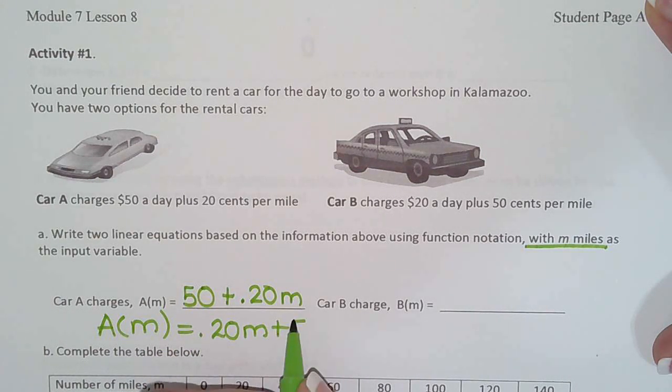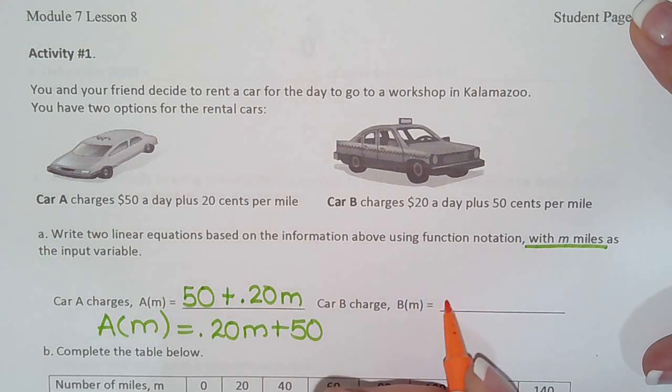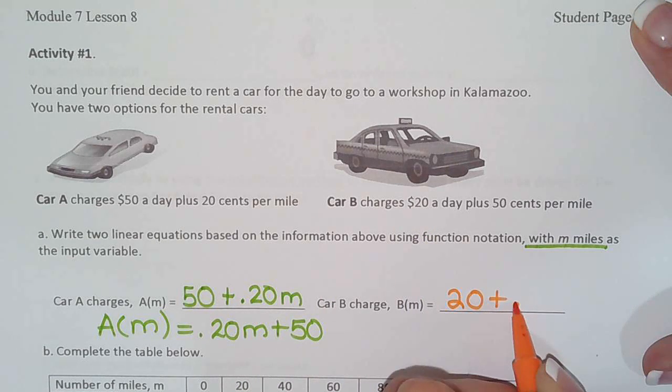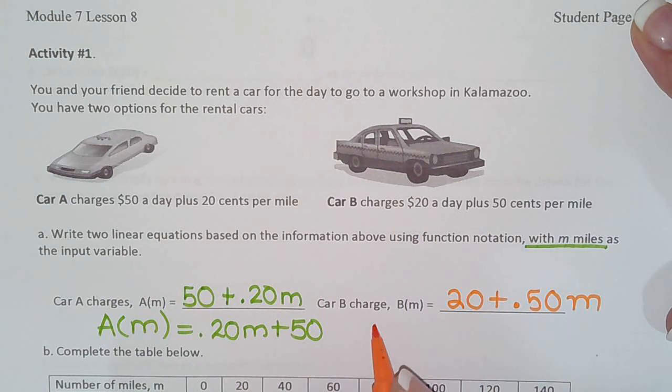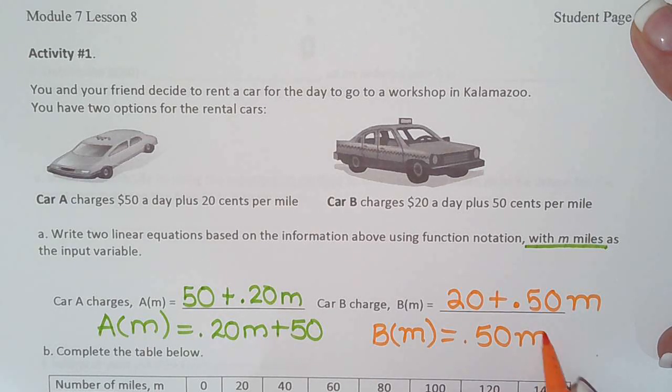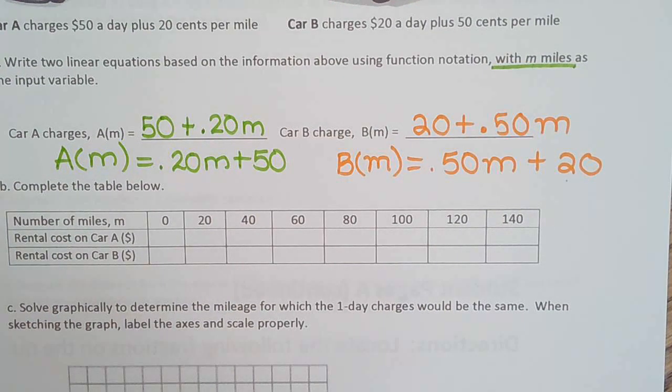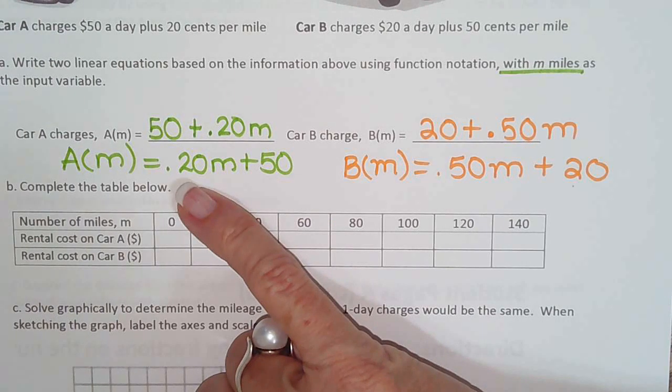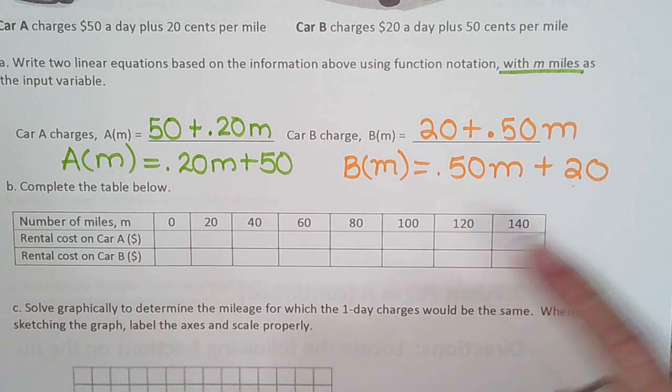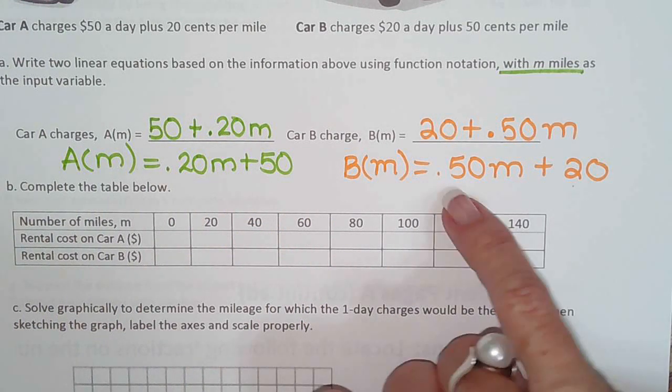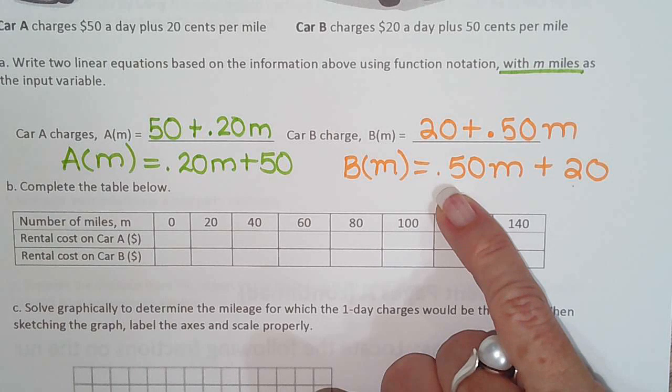And if you want to turn it around into Y equals MX plus B so that you can easily read the slope and the Y intercept, it will be car A after M miles is $0.20 per mile plus $50. Car B is $20 a day plus $0.50 per mile. So turning it around in our normal Y equals MX plus B would be 0.50M plus a $20 fee.